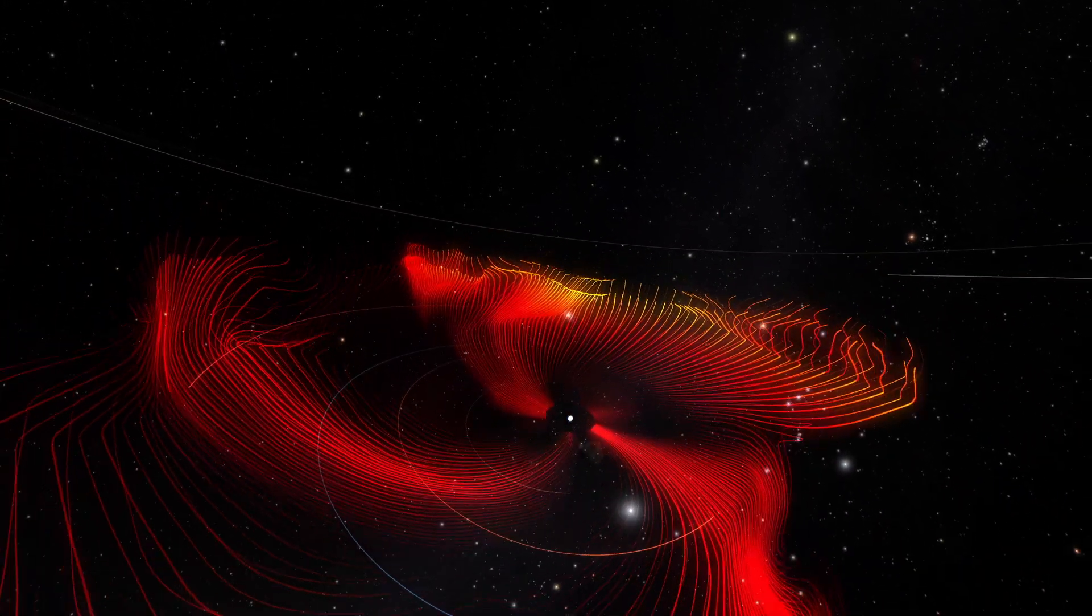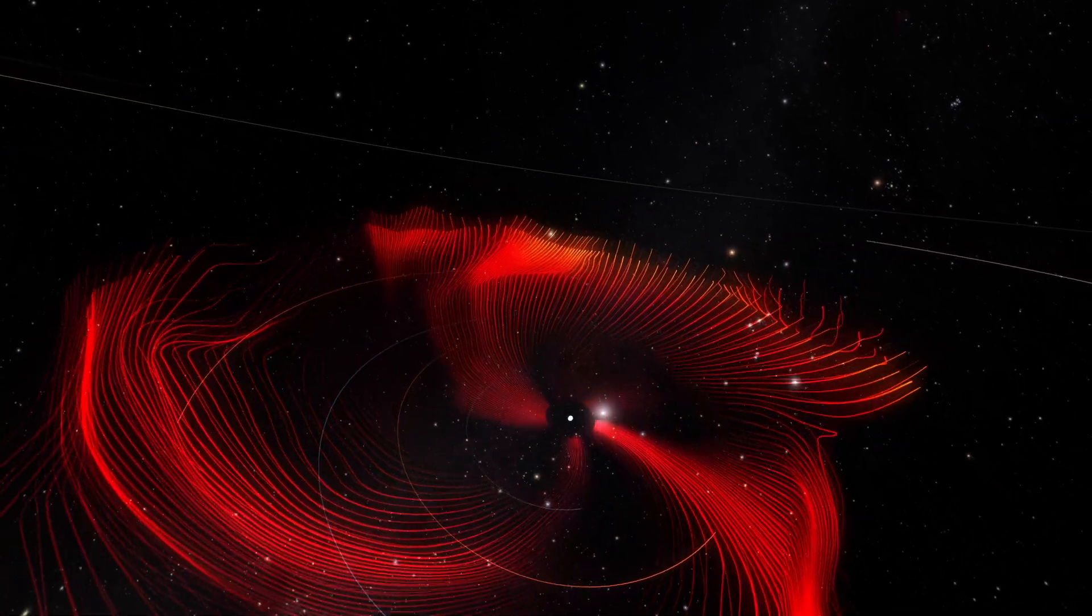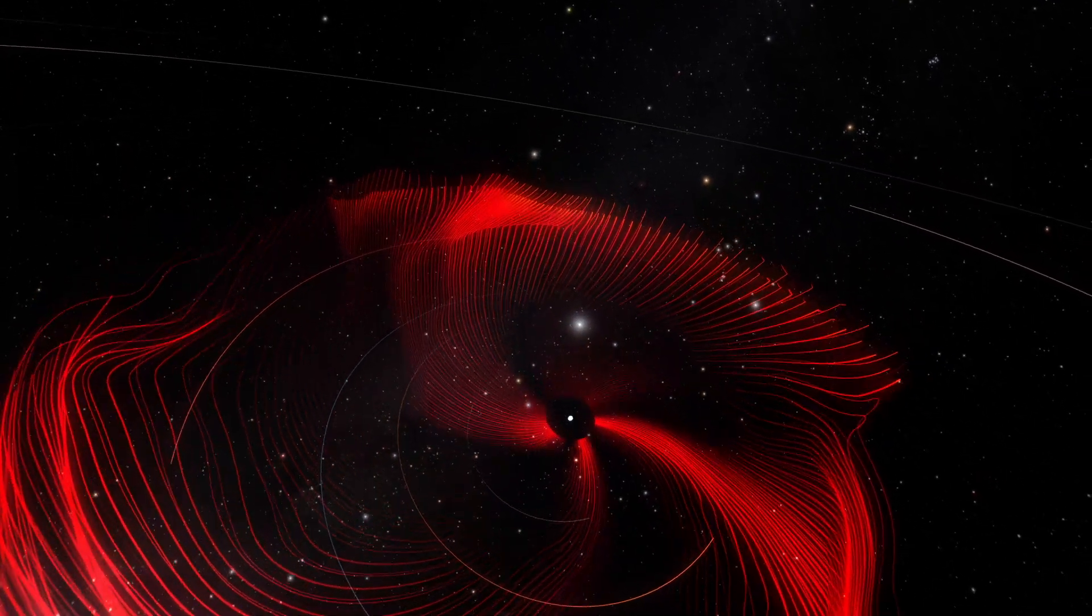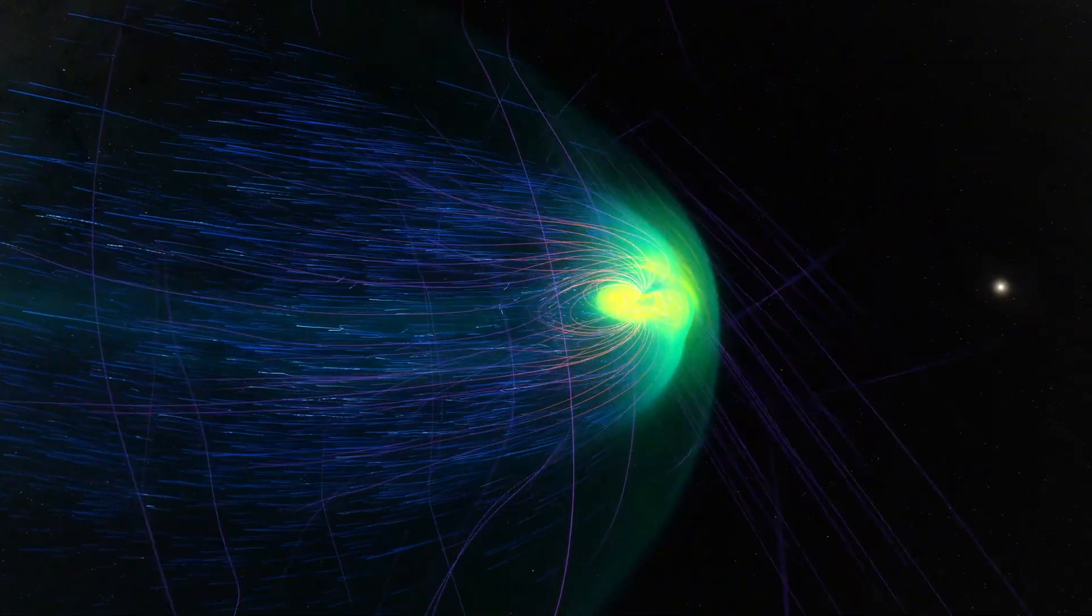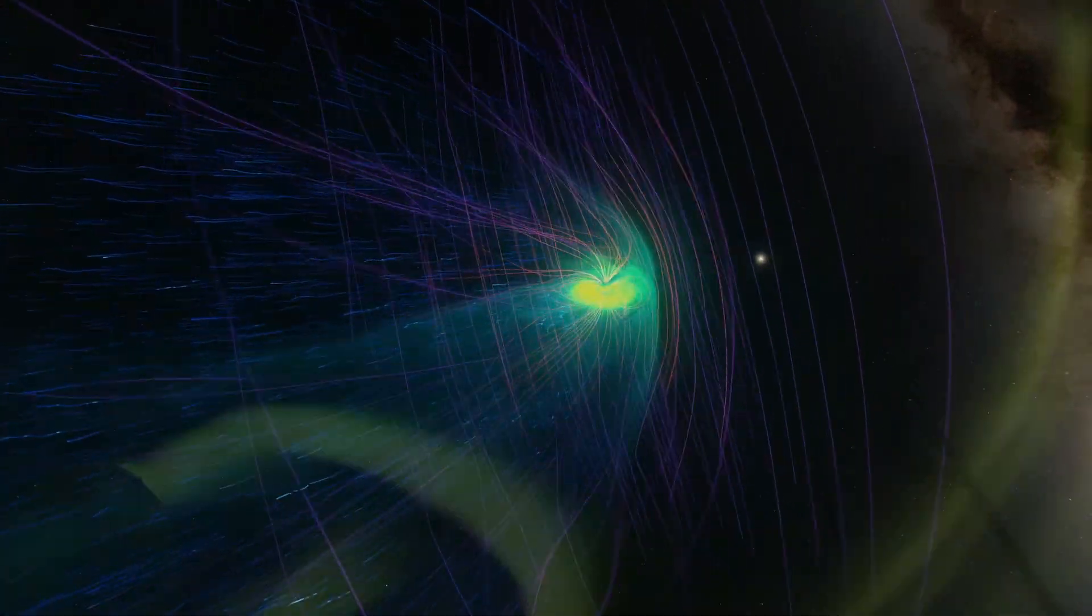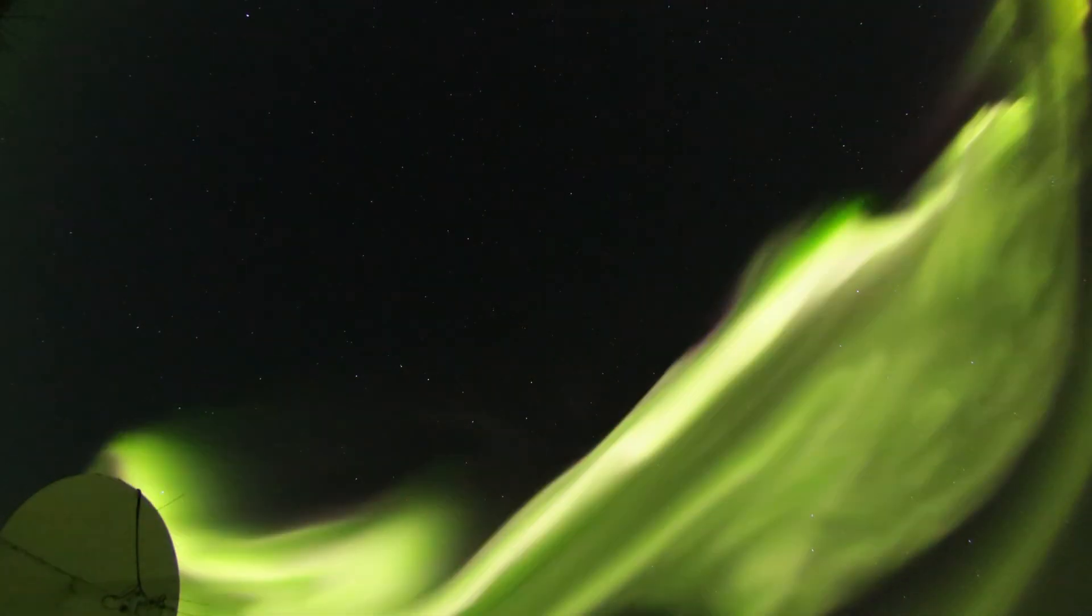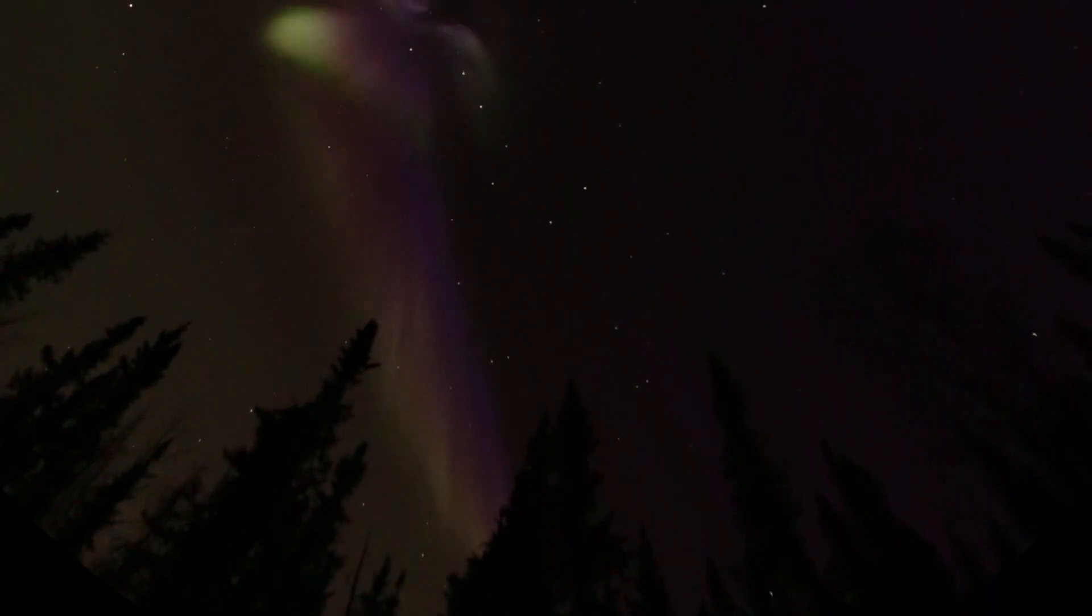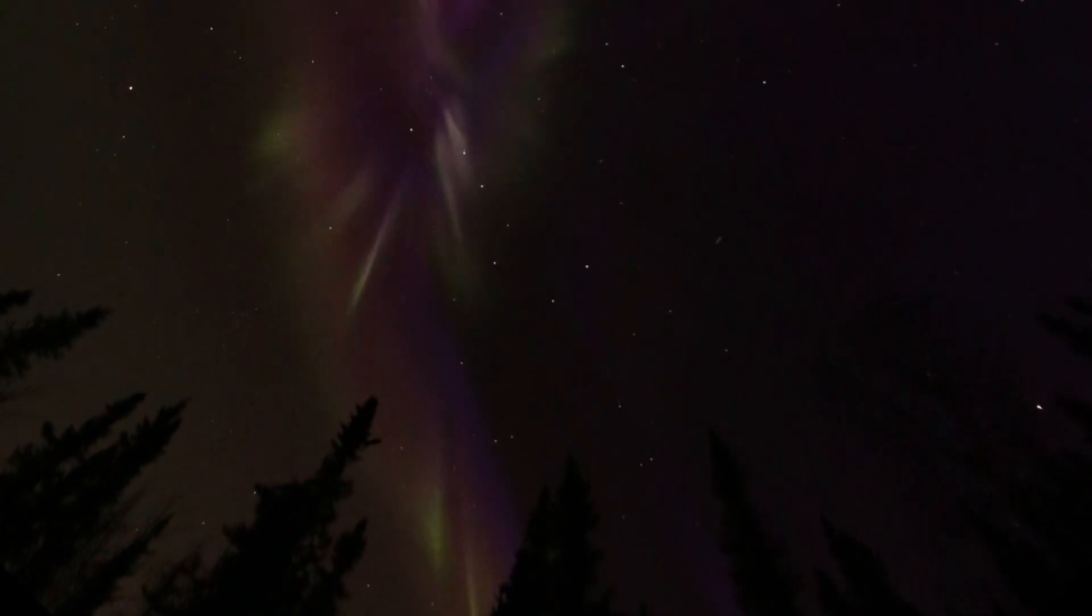If a CME is directed toward Earth, it can be dangerous for satellites, astronauts, and power grids. The storm's disruption to Earth's protective magnetic field can also create beautiful auroral displays. How can we better understand and learn to predict these events?